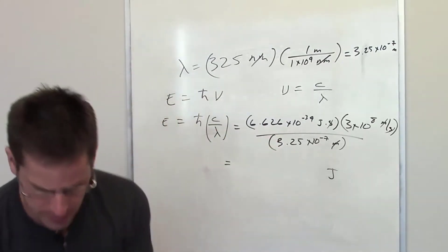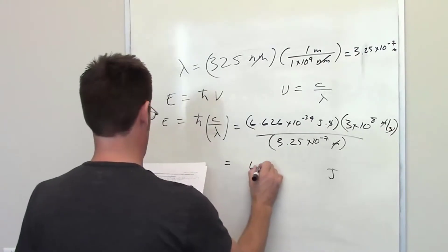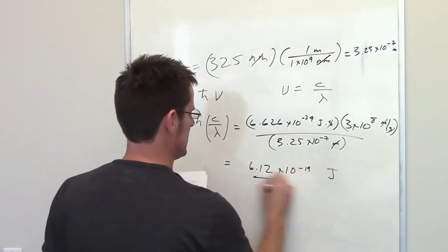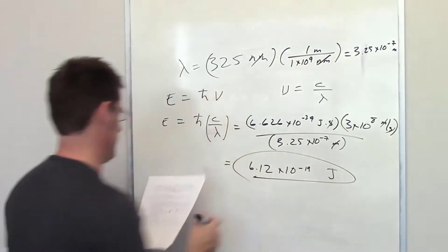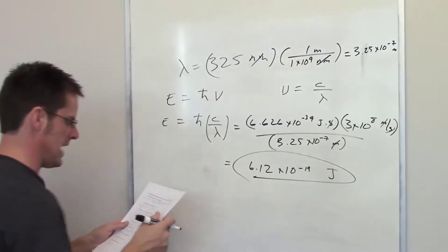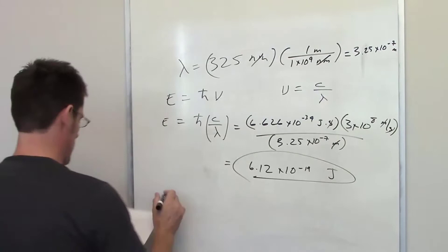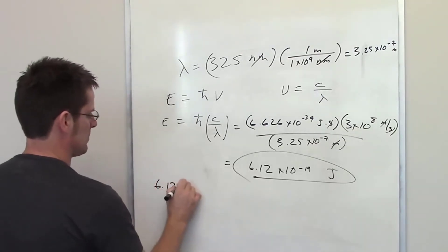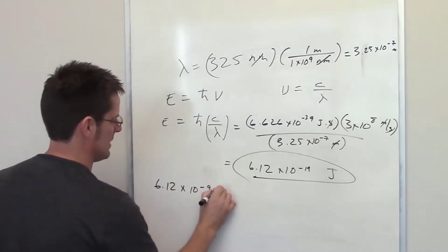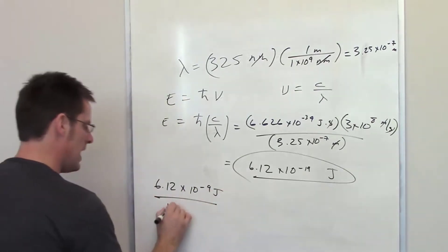Plug and chug with your calculators and we end up getting a final answer of 6.12 times 10 to the negative 19th joules. Now in Part B, it asks us what is the energy of a mole of these photons. So we have to keep in mind that there are 6.12 times 10 to the negative 19th joules in one photon.